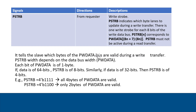For example, if PSTRB is 1111, it means data is 4 bytes wide and all 4 bytes are valid during the write transfer. If PSTRB is 1100, it means PSTRB is 4 bits and PWDATA is 4 bytes, but only 2 bytes are valid during the write transfer.